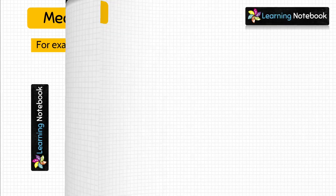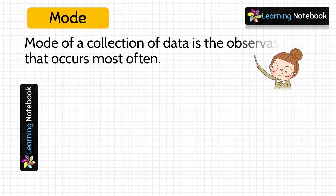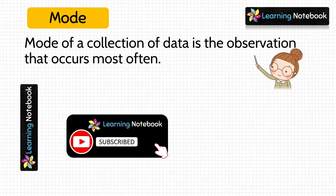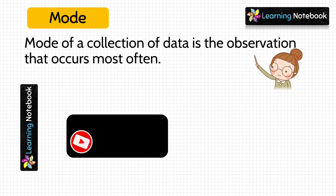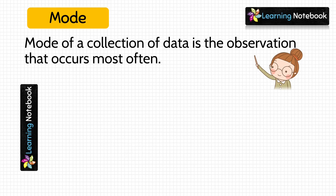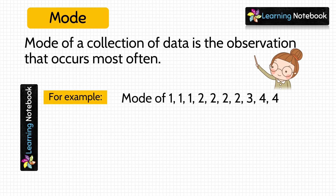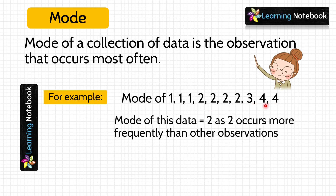Next we are going to learn about mode. Mode of a collection of data is the observation that occurs most often. In our example, 1 occurs 3 times, 2 occurs 4 times, 3 occurs once, and 4 occurs 2 times. So the mode of this data is 2, because 2 is occurring more frequently than any other observation.